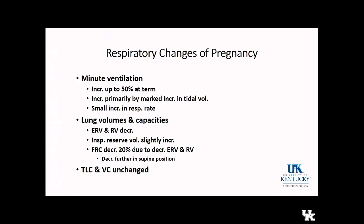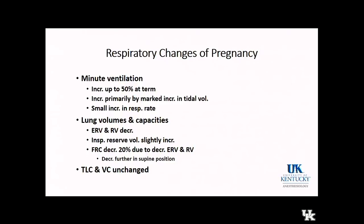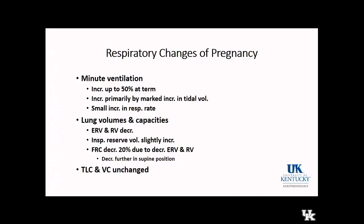In terms of lung volumes and capacities, ERV and RV are decreased during pregnancy, while inspiratory reserve volume is slightly increased. Due to those decreases in ERV and RV, FRC is decreased by about 20% in a normal pregnant woman sitting up. In the supine position for a C-section, you see a further decrease in FRC, and with comorbidities such as morbid obesity, even further decreases occur. Total lung capacity and vital capacity should be unchanged in a normal pregnant patient.